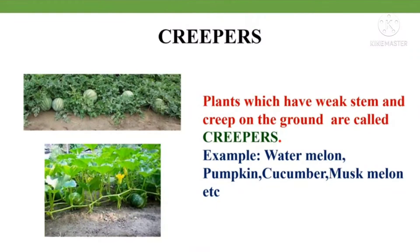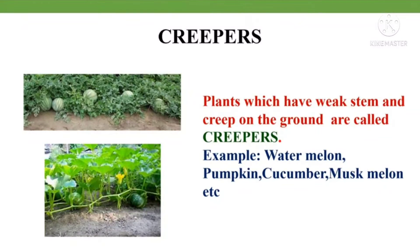Creepers. Dear children, plants which have weak stems and creep on the ground are called creepers. Examples: watermelon, pumpkin, cucumber, musk melon, etc. are examples of creepers. These plants have very weak stems. As you can see in this picture, watermelon and pumpkin are creeping on the ground because the plant cannot hold the fruit — they are very weak.